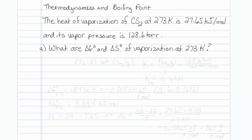This is another way that thermodynamics and boiling point are related. The heat of vaporization of carbon disulfide at 273 Kelvin is 27.65 kilojoules per mole, and its vapor pressure is 128.6 Torr. What are the free energy of vaporization and delta S of vaporization at 273 Kelvin?